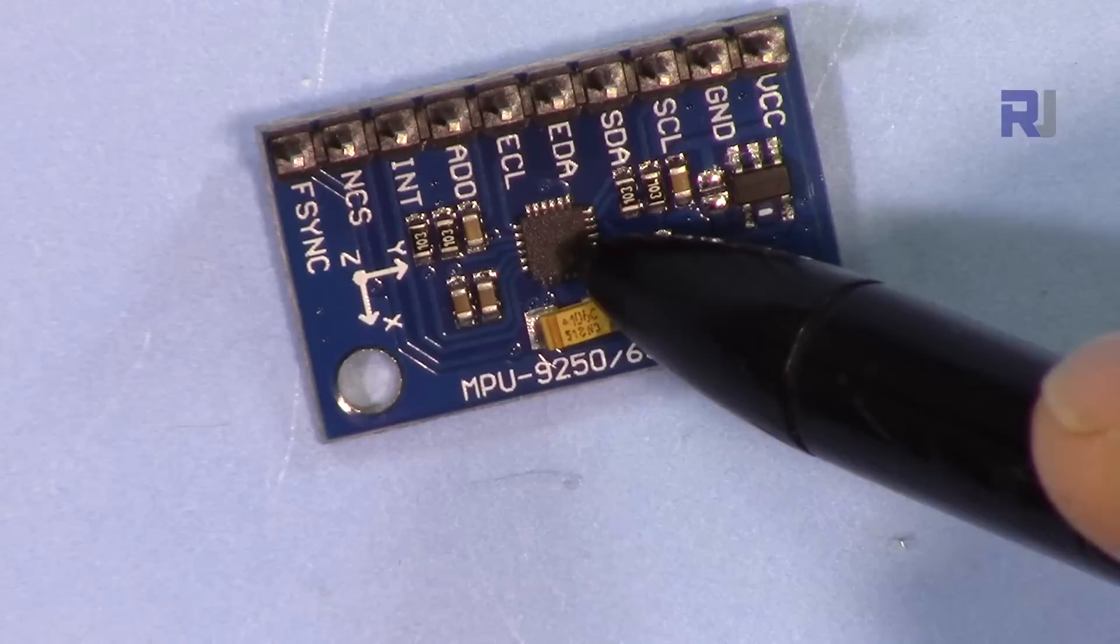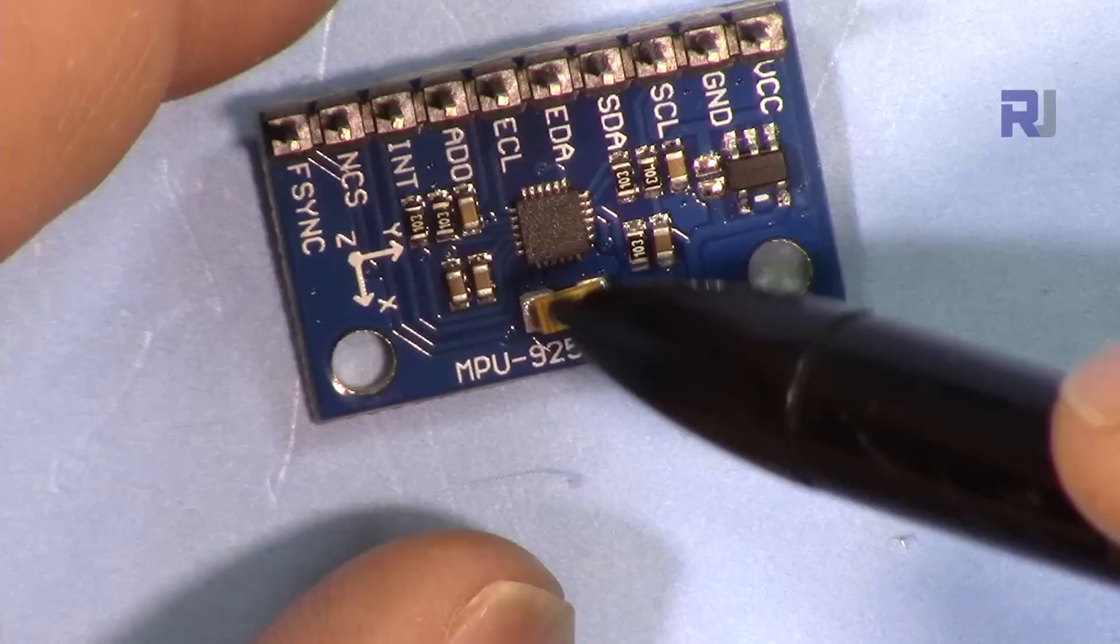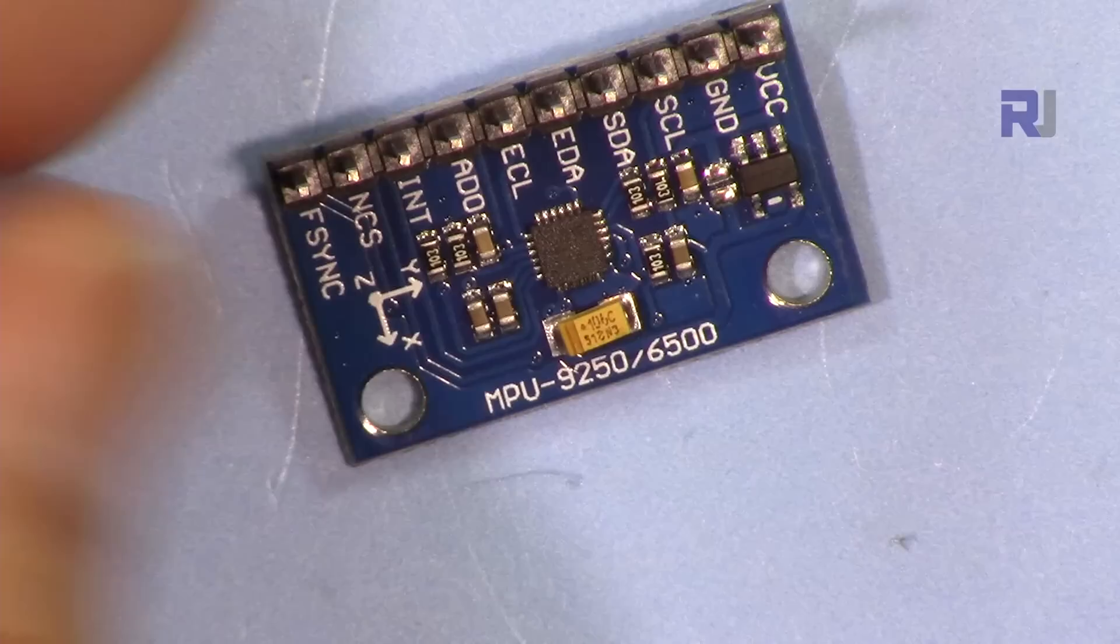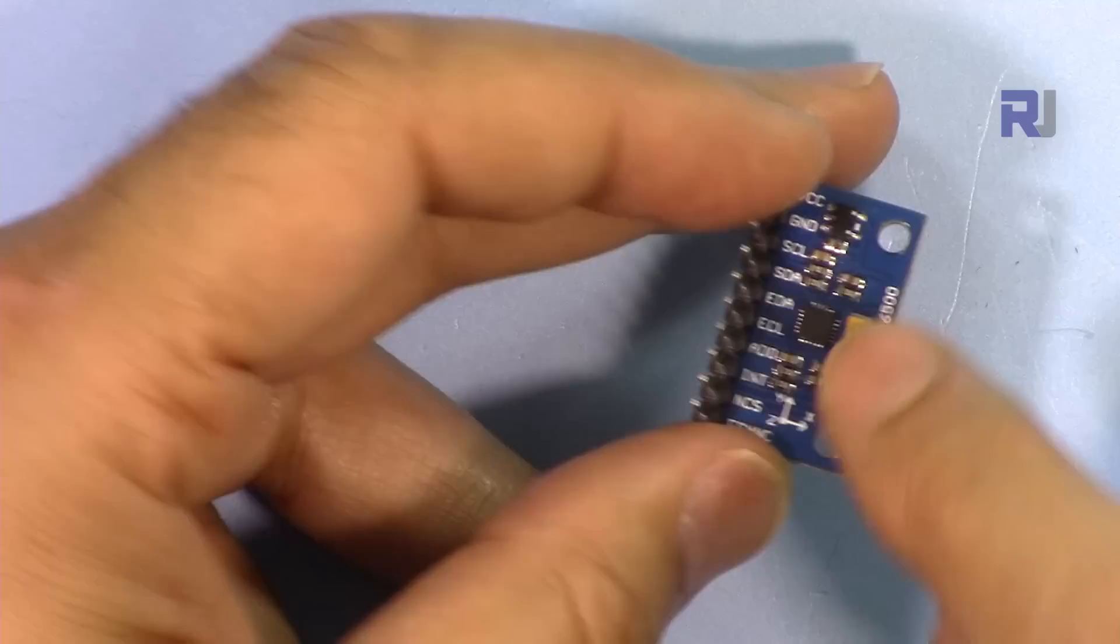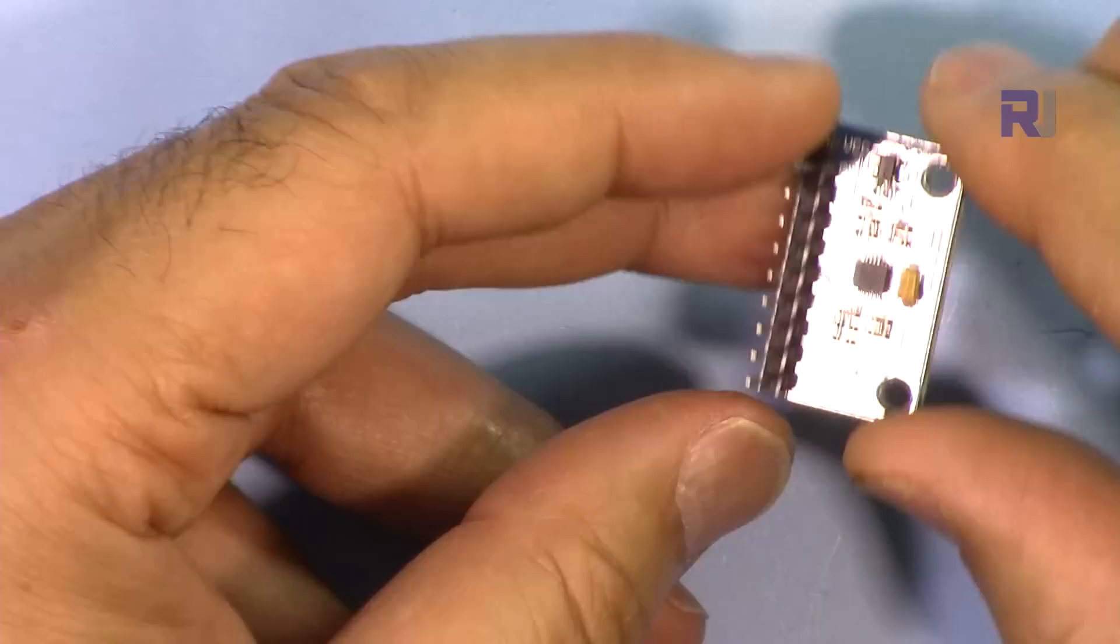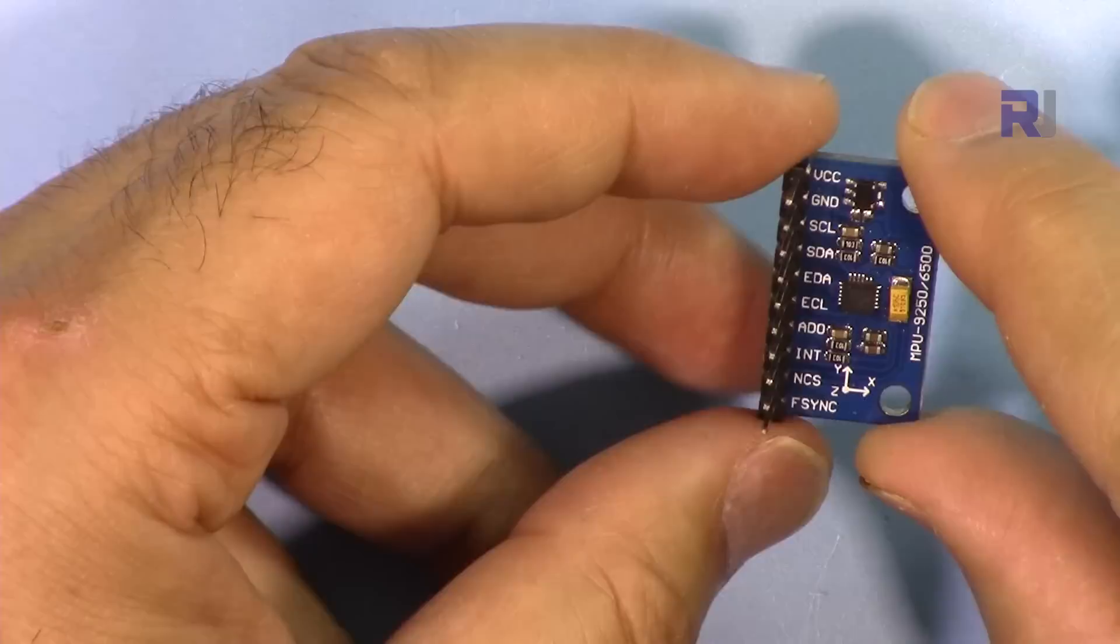It can give you the speed or acceleration of an object at any moment. It also has a magnetometer which means it can give you the magnetic field around this or the magnetic field of Earth, and from that you can use it as a compass as well.